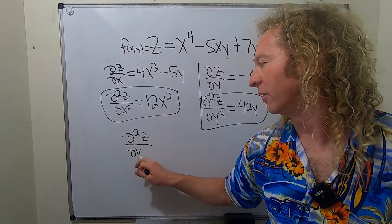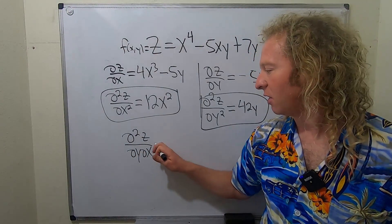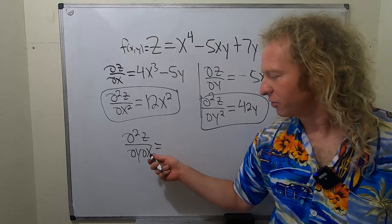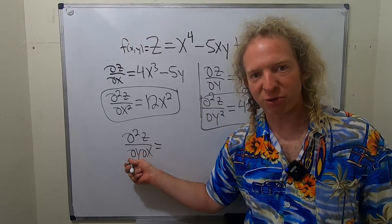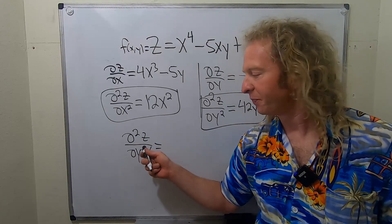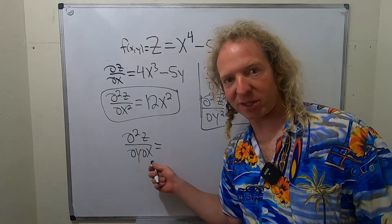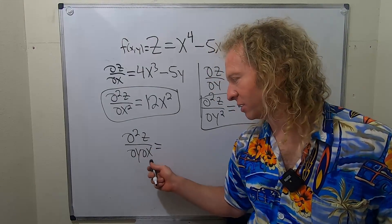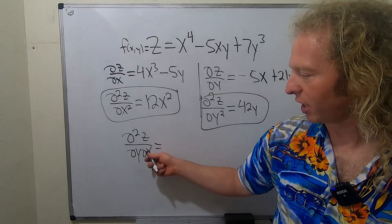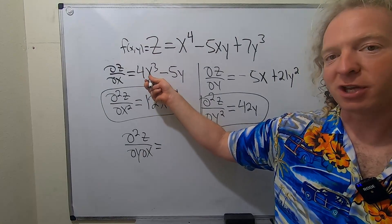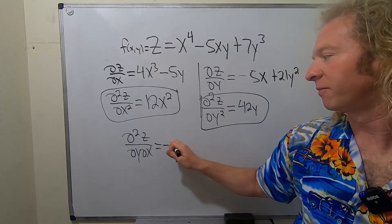Now the tricky part — del y del x. This is called the mixed partial. So first you find the partial with respect to x, then you find the partial with respect to y. This notation is read right to left. So you look at del z del x up here, then you take the partial with respect to y. That's just going to be negative 5.